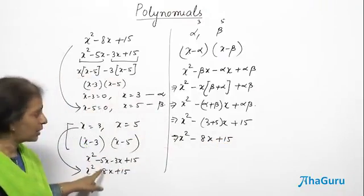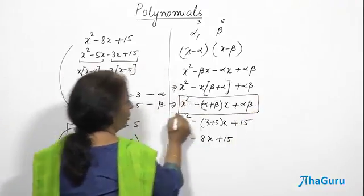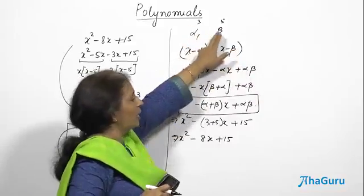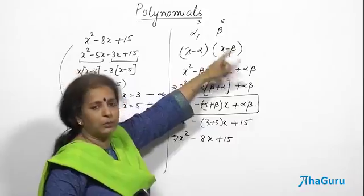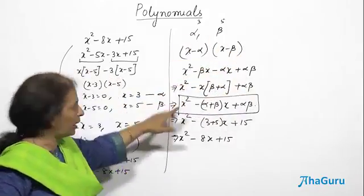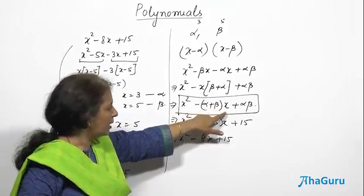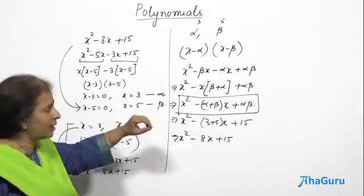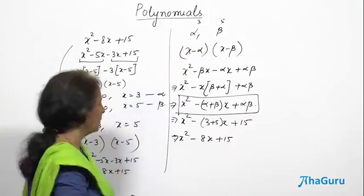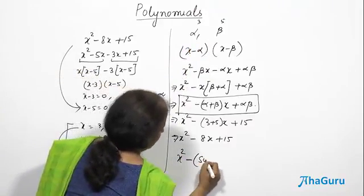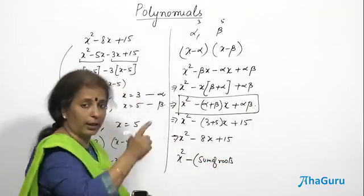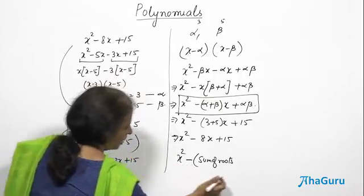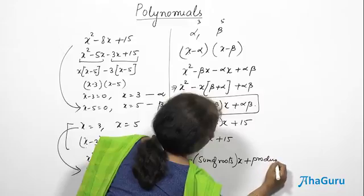So even without multiplying each term, by just using this expression, I can write the quadratic polynomial if I know the roots. The roots are alpha and beta, x minus alpha and x minus beta are the factors. Multiplying gives the generalized format: x squared minus (alpha plus beta)·x plus alpha·beta. In words: x squared minus sum of roots times x plus product of the roots.